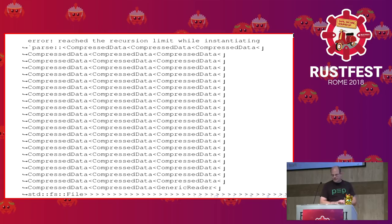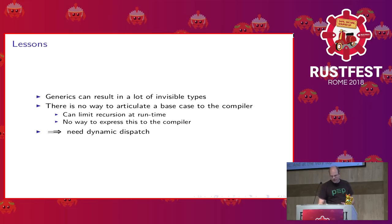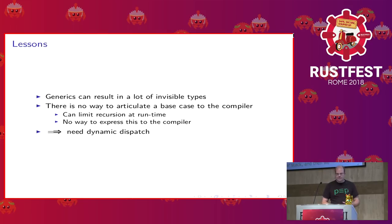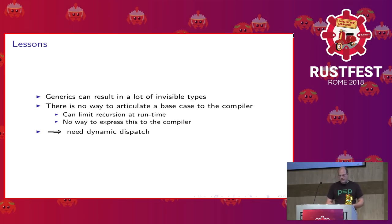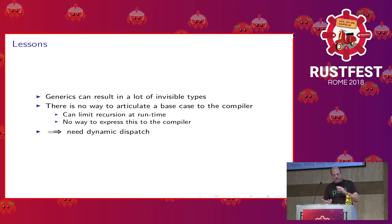When you try to compile that, Rust complains — it says you've reached the recursion limit while instantiating a really, really long type. It turns out that Rust isn't able to recognize base cases when you're doing recursion with the type system. We have the generic parser calling the compressed data packet parser, which in turn calls the generic parser, so we get that really long type. The obvious thing would be to articulate a base case, but there's no way to express that in Rust right now. There's also an interesting insight: generics can result in a lot of invisible types that you don't actually need in practice, because nobody's going to create 16 levels of compression containers — it just makes your message bigger.